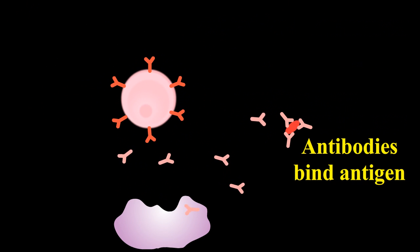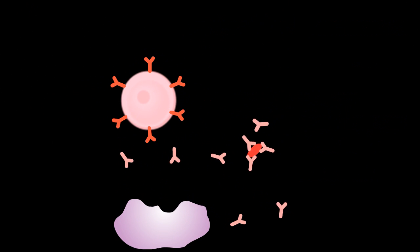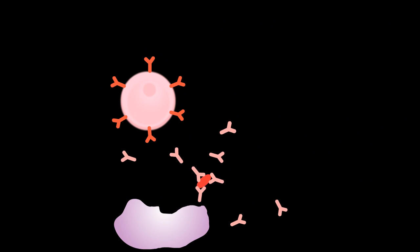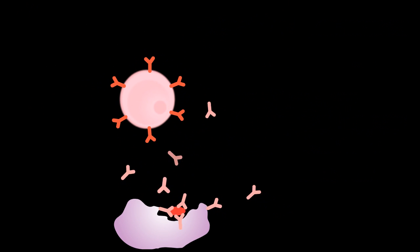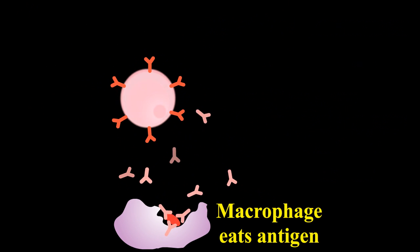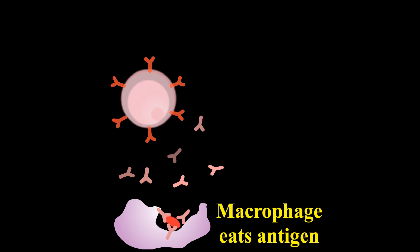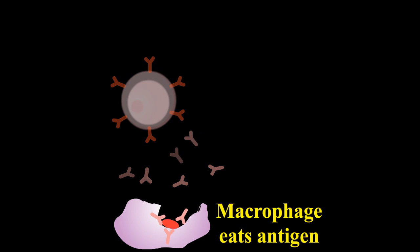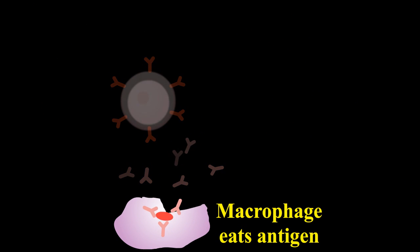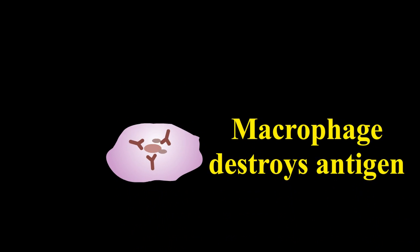When an antigen stimulates the immune system, antibodies are produced that are specific to that antigen, and powerful white blood cells appear to destroy the invading antigen.